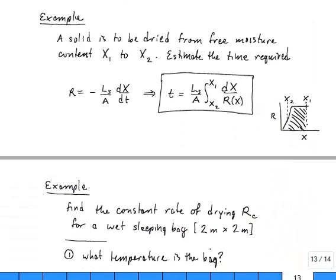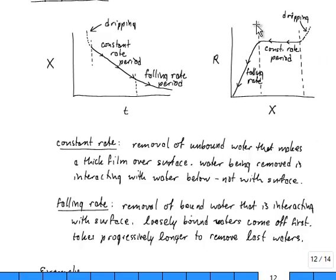Let's walk through a little example. A solid is to be dried from free moisture content x1 to free moisture content x2. Estimate the time required to do that. We have this differential equation that tells us the rate of drying is equal to minus ls over a times the derivative of the free moisture content with respect to time. So we can integrate that equation. In order to actually evaluate this integral we would need some numerical representation of this drying curve as I showed you above.